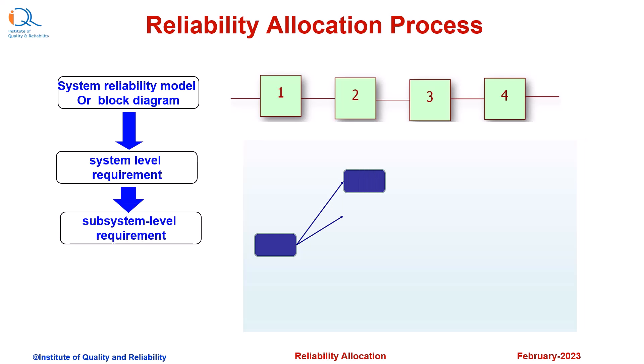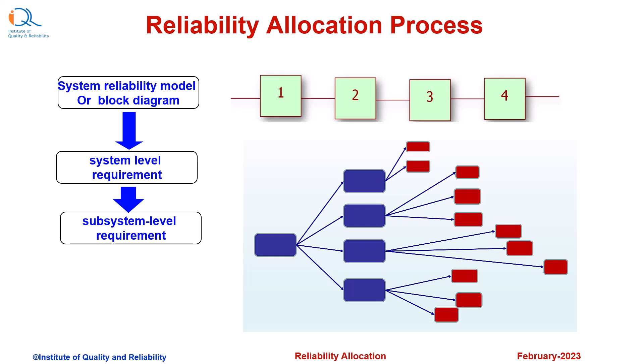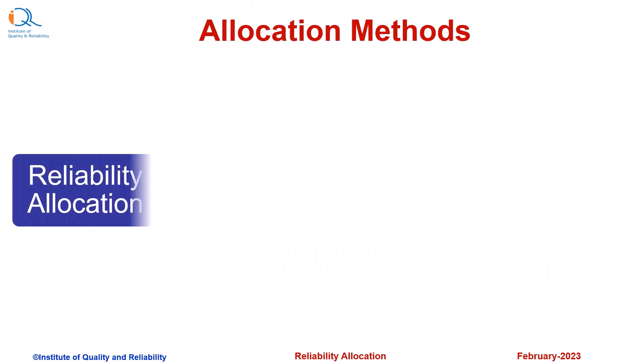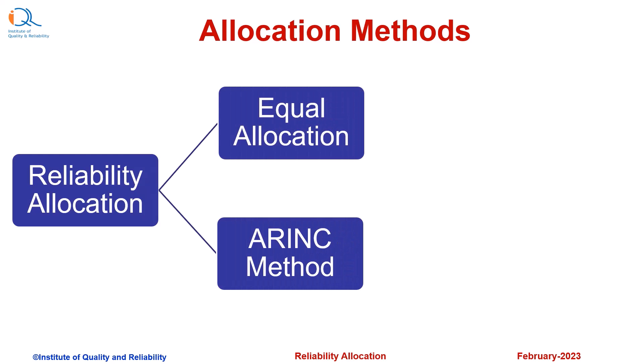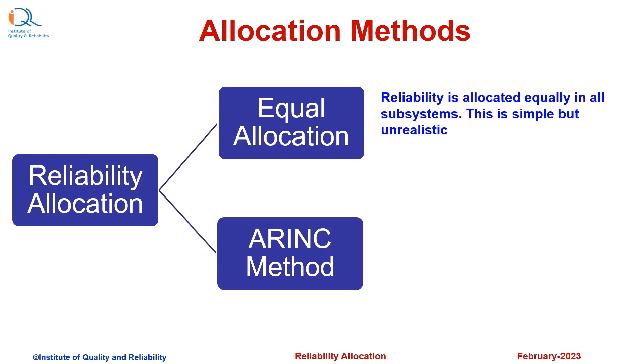Based on this, we allocate an apportioned subsystem-level requirement, and then requirements for each subsystem component are finalized based on the allocation model. Commonly used allocation methods are equal allocation and the ARINC method. In equal allocation, reliability is allocated equally to all subsystems. This is simple but usually unrealistic.